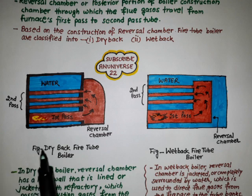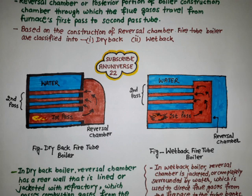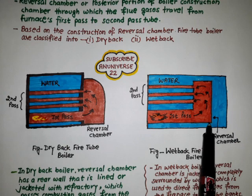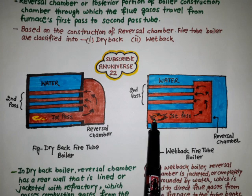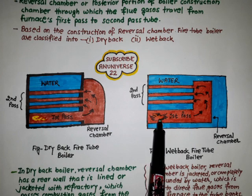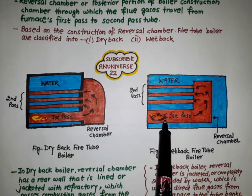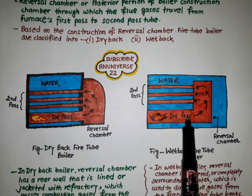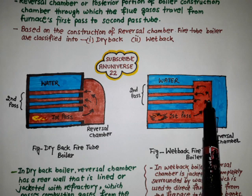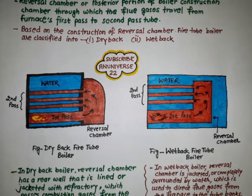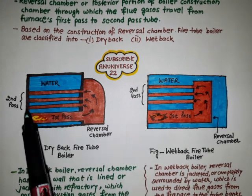The frustrating problems brought by the dry back fire tube boiler can be resolved by the wet back fire tube boiler. In the diagram we can see the reversible chamber of the wet back fire tube boiler. These are the flue tubes, and this is the furnace. After burning of the fuel, this is the first pass of the flue gases, which are collected in the reversible chamber, and from the reversible chamber in the second pass they move to the flue tubes.